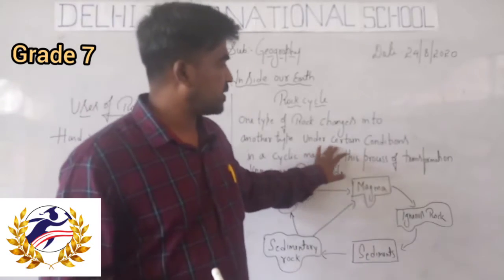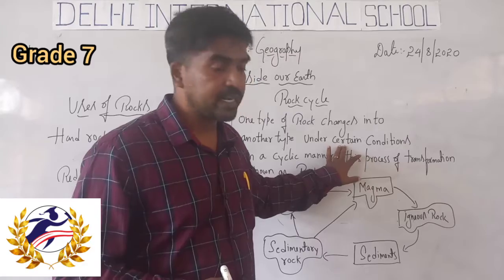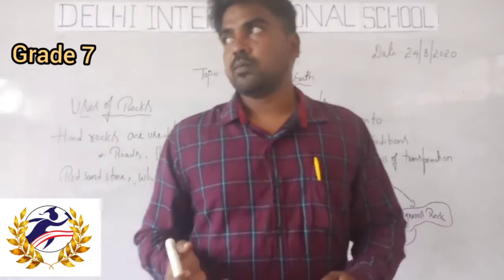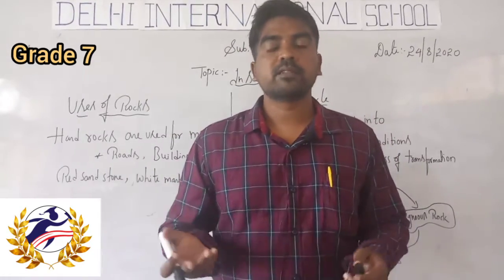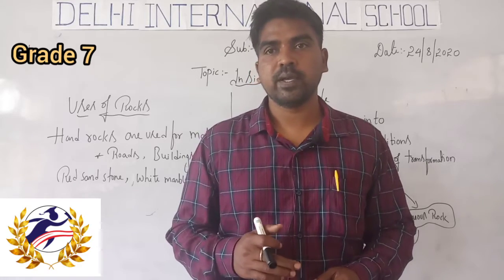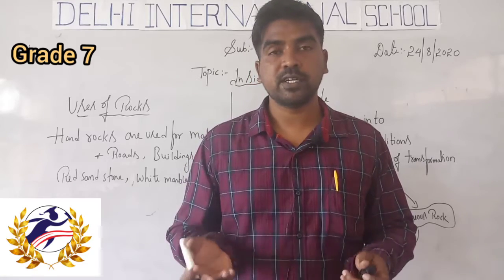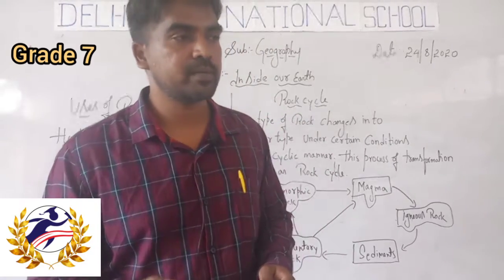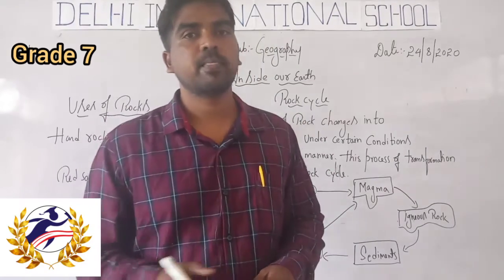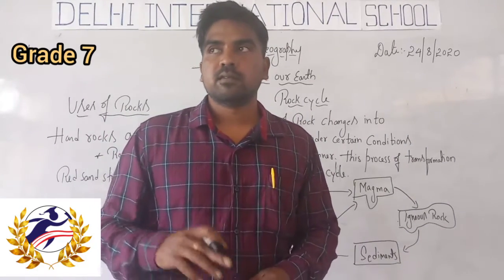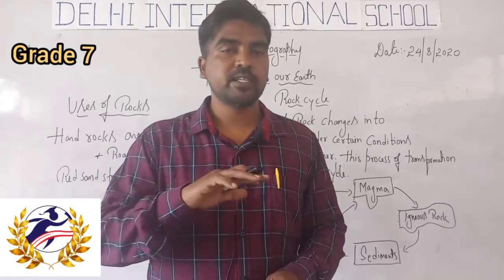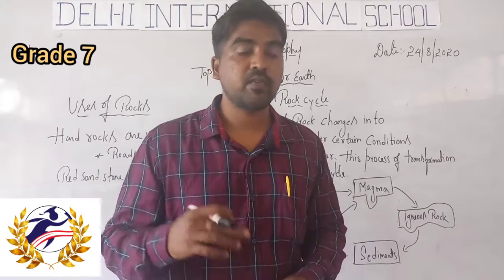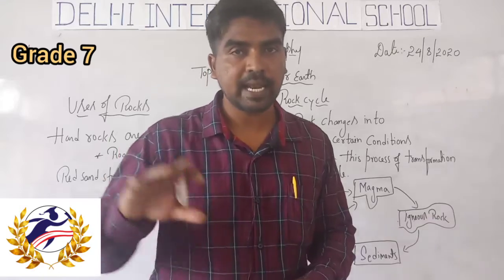What do we mean by 'certain conditions'? The earth keeps on changing — natural disasters take place. Sometimes there will be an earthquake, sometimes a volcano, and sometimes the outer surface is destroyed due to natural calamities like floods, heavy rain, and landslides.